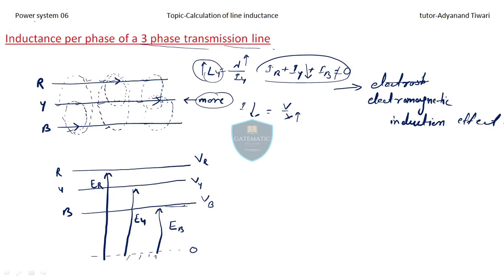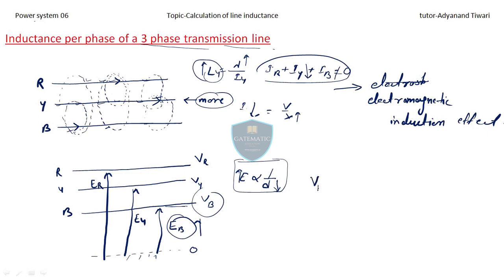The distance between the ground and B phase is lesser, and since electric field is inversely proportional to distance, the electric field intensity across B phase is greater than the others. In the balanced case, VR + VY + VB = 0, but due to the difference in electric field, VB is increased and the system becomes unbalanced in voltage. This is called the electrostatic effect.